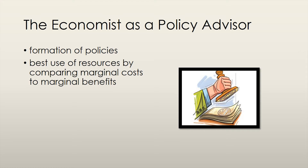When economists advise the government on policies that should be implemented, there is a lot that goes into it — it's a very complicated process. Put very simply, the economist tries to figure out what the best use of the resources in the economy is. He or she does so by comparing the marginal costs, or the additional cost of producing an additional unit of a good, to the marginal benefits, or additional benefits gained from consuming an additional unit of a good.